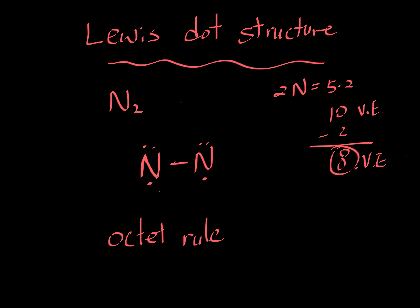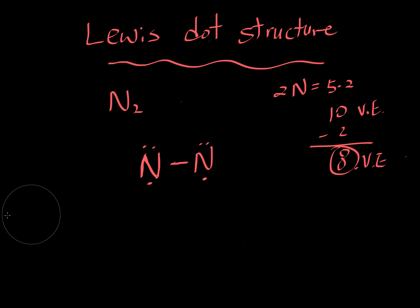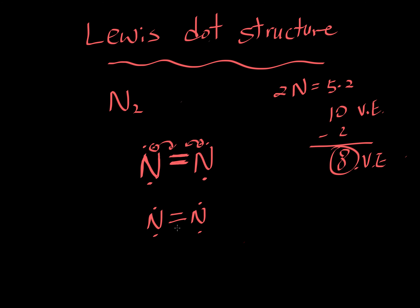In order to increase the number of electrons, instead of having one bond, you could form a double bond. When you form a double bond, remember each line represents two electrons — so those electrons must come from the lone pairs. Now we have N=N with a double bond and lone pairs. Let's count: one, two, three, four, five, six, seven, eight — we could put two more. So we'd have ten total electrons.